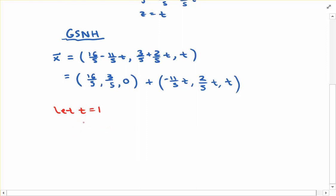If t equals 1, then x equals 16 fifths, 3 fifths, 0 plus negative 11 fifths, 2 fifths, 1. Combining the corresponding components: 16 fifths minus 11 fifths gives us 5 fifths, 3 fifths plus 2 fifths gives us 5 fifths, and 0 plus 1 gives us 1.